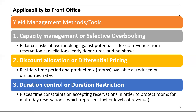Third: duration control or duration restriction, based on the management information system. The reservation department might find it more beneficial for the hotel to refuse a reservation request for one night even though the room may go vacant, with the objective of accommodating an expected request for more nights by another guest representing higher revenue. It places time constraints on accepting reservations in order to protect rooms for multi-day reservations, which represent higher levels of revenue.